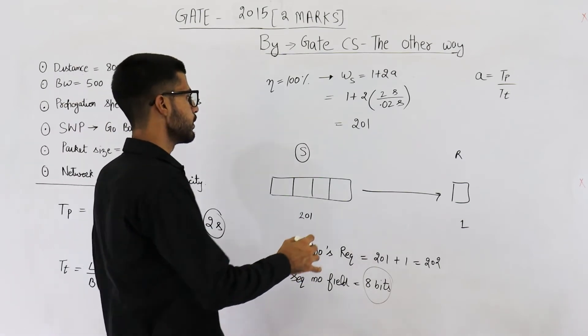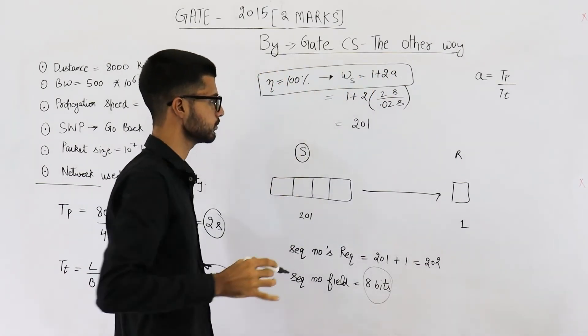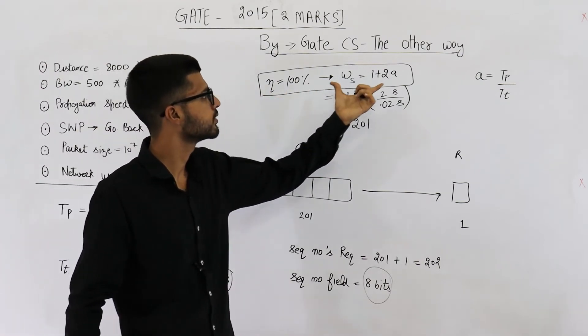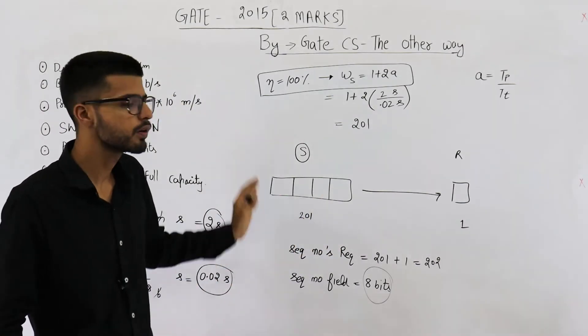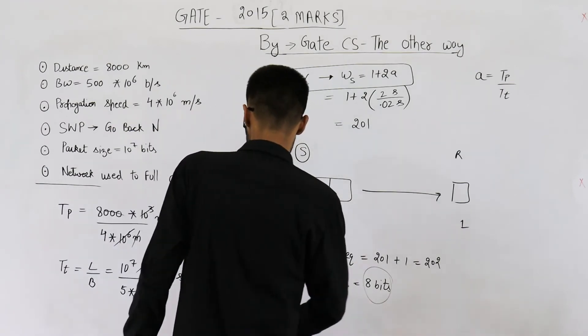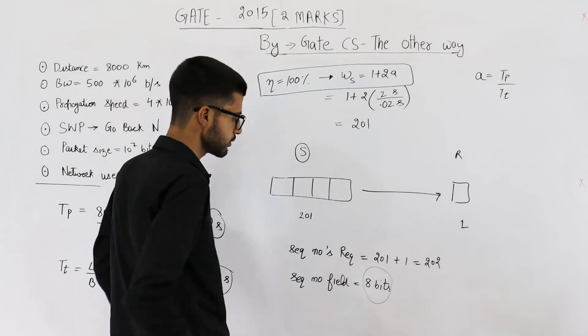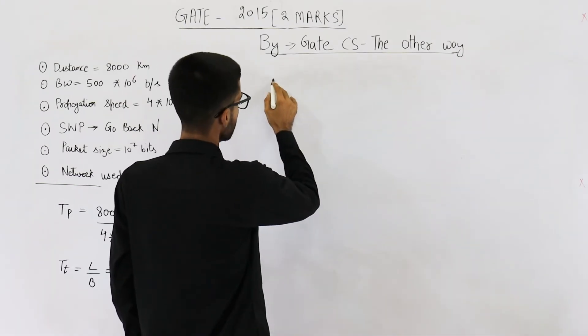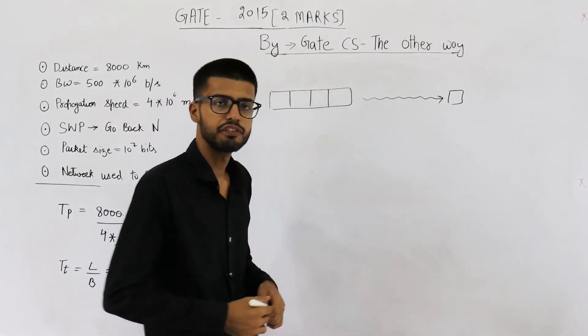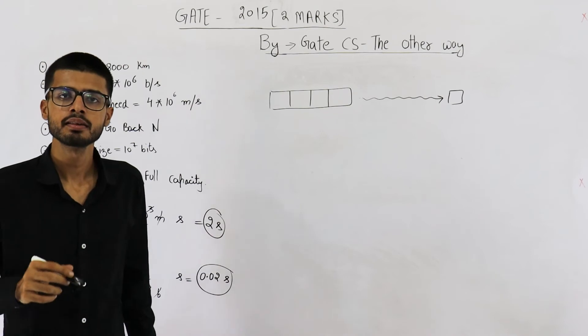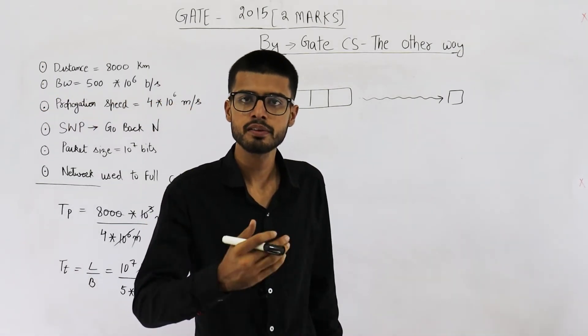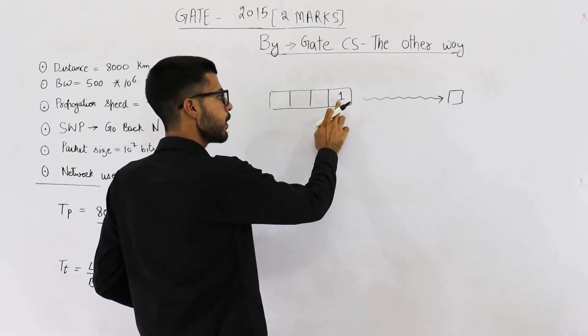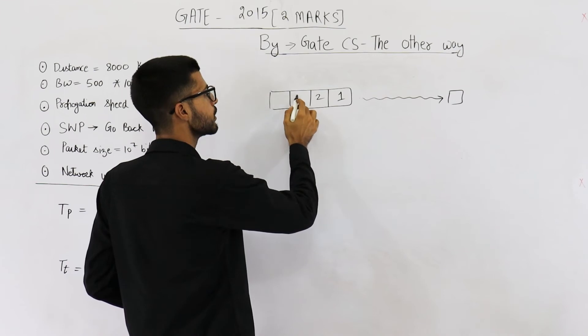Now let us discuss how is this condition derived. You don't actually need to know the proof for solving this question. Even if you have memorized that 100% efficiency means sender window size must be 1 plus 2a, still you can solve this question, but I like to explain it. Answer to this question is 8 bits. If you want 100% efficiency, the condition is sender must not wait for any acknowledgement. It will continuously keep on sending the packets. Suppose sender has sent the first packet, that one will be placed in the window. We haven't got any acknowledgement. Still, you will send second packet and place it in window. Third packet, fourth packet, we will send.